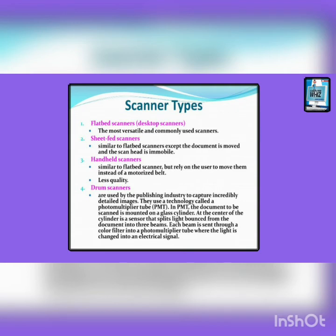Let's have a look at different types of scanners. Number one, flatbed scanner: it is the most versatile and commonly used scanner. Number two, sheet-fed scanners: similar to flatbed scanners except the document is moved and the scan head is immobile. Number three, handheld scanners: similar to flatbed scanner but rely on the user to move them instead of a motorized belt. Less quality.